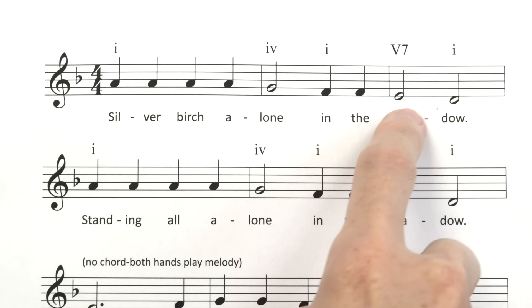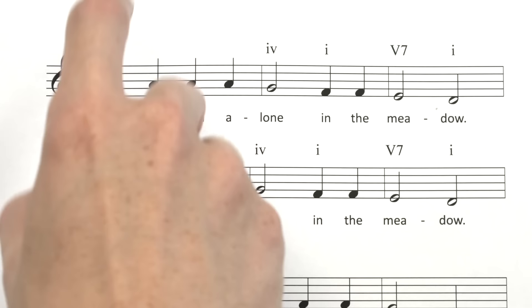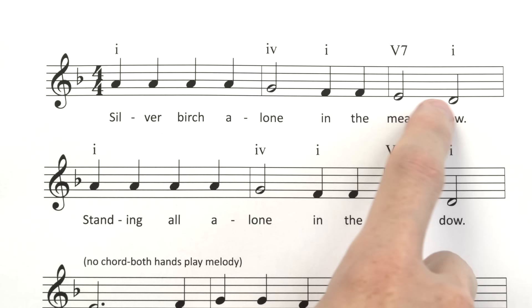Now let's check out the rhythm. Let's say TA for the quarter notes and let's say two two, with two beats for the half notes. Speak the rhythm with me. Ready, go. TA TA TA TA TWO, TA TA TWO, TWO. Great job.